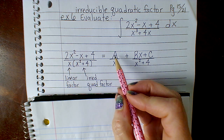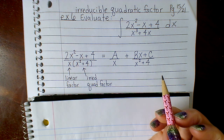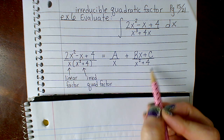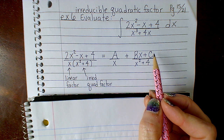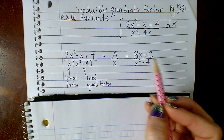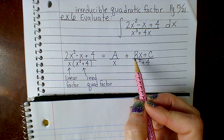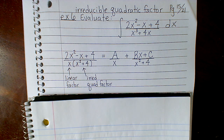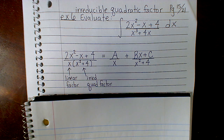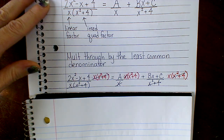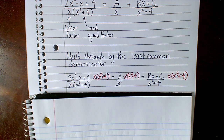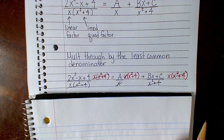This is a proper rational function for my integrand because the degree of the top is 2 and the degree of the bottom is 3. If I factor out an x, I get x times the quantity x squared plus 4. The x is a linear factor, so its partial fraction decomposition is a constant over the linear factor. The irreducible quadratic x squared plus 4 cannot factor over the real numbers, so its decomposition has a linear numerator — I used bx plus c since a was already taken.